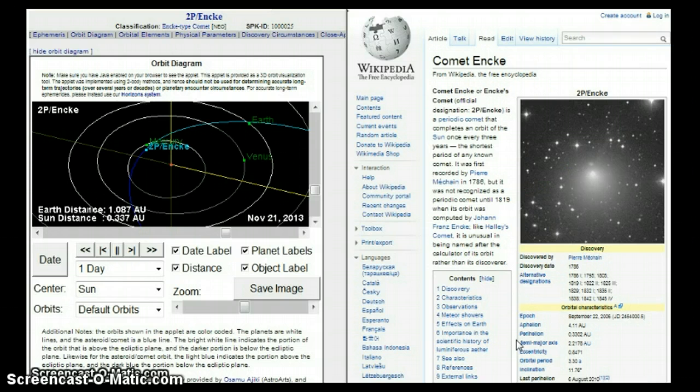Now comet 2P/Encke is a periodic comet. It completes an orbit of the Sun once every three years, the shortest known period of any known comet. It was first recorded back in 1786 but was not recognized as a periodic comet until 1819 when its orbit was computed by John Franz Encke. Like Halley's Comet, it is unusual in being named after the calculator of its orbit rather than the one who discovered it.